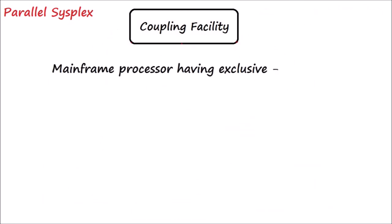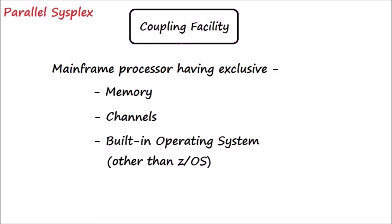The coupling facility is a mainframe processor having its own memory, channels, and a built-in operating system, but no input/output devices. The CF operating system is nothing like z/OS and it has no direct user interfaces.